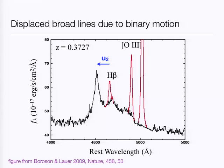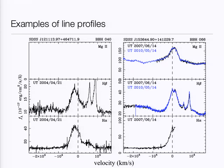We started with an automatic selection algorithm, then inspected many spectra by eye, and selected close to 90 objects from the Sloan Digital Sky Survey that have line profiles resembling this shape. Here are a couple of examples. On the left, this is the H-beta line. The O III lines provide a very good velocity reference, and you can see that the broad peak is shifted to the blue relative to the frame defined by the narrow lines. In another example, the broad lines are shifted to the red. We can observe the same shift at H-alpha and H-beta, and in one object we can also catch Mg II, and the shifts of all broad lines are consistent with each other, lending confidence that we might be looking at motion of the entire broad line region.